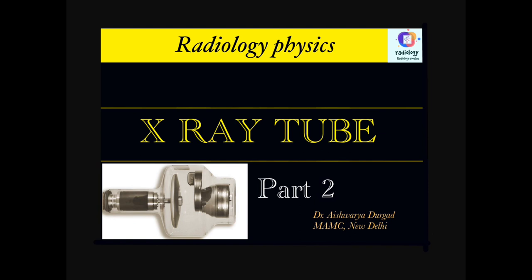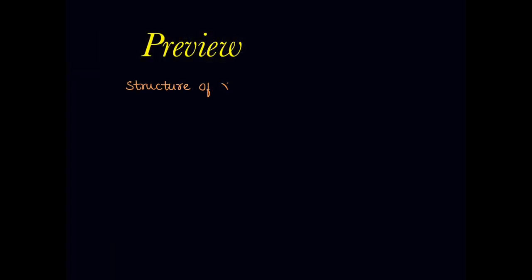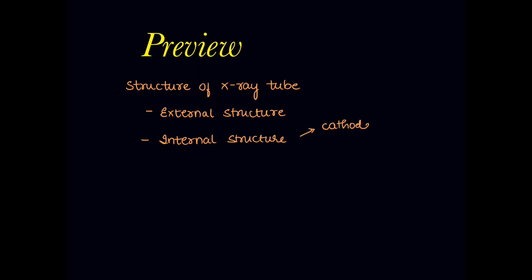In this video, we will learn principles and types of x-ray tube. In part 1 we have discussed structure of x-ray tube, its external structure, internal functional components which are cathode and anode. Types of anodes are also discussed in the first video.